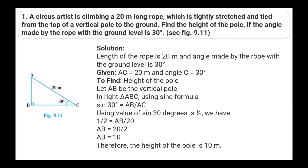The first question: A circus artist is climbing a 20-meter long rope which is tightly stretched and tied from the top of a vertical pole to the ground. Find the height of the pole if the angle made by the rope with the ground level is 30 degrees. Given: AC is 20 meters and angle C is 30 degrees.